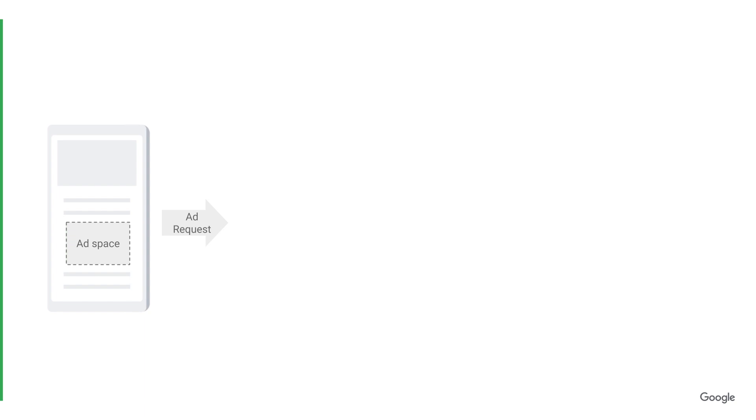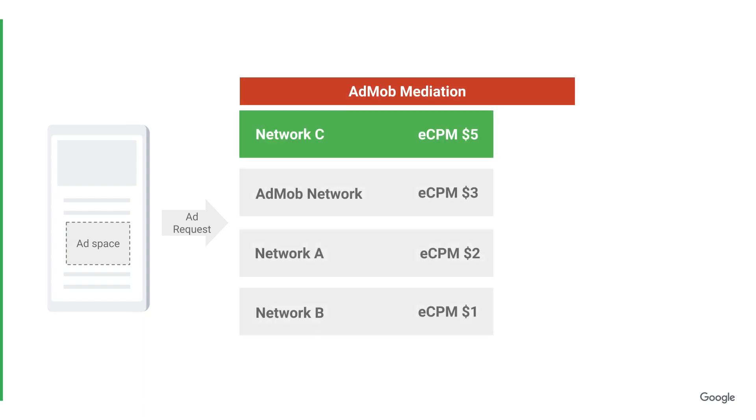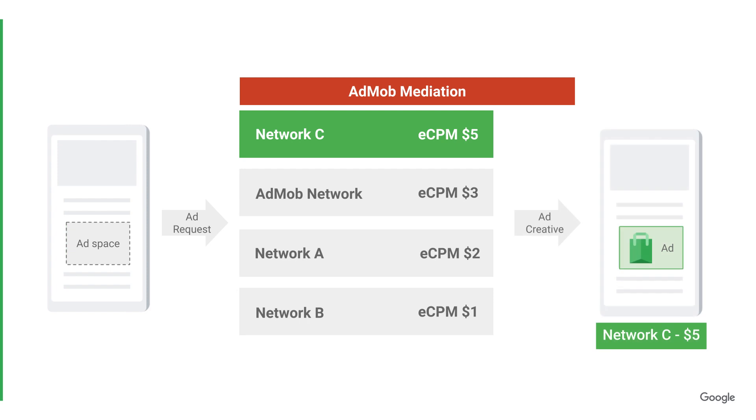Here's how it works. Using mediation, your app can send ad requests to multiple ad sources and show an ad from the highest paying one.